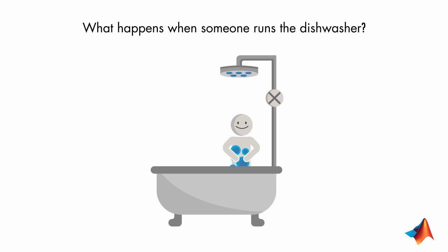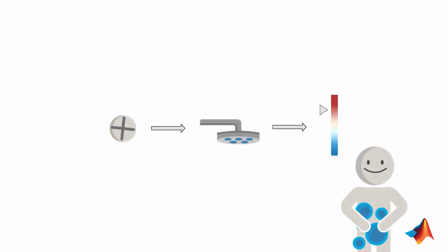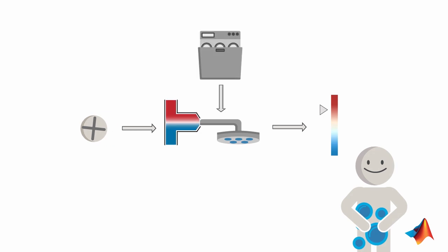Water gets freezing cold. The reason is that when the dishwasher is running, the hot water supply is used up and therefore less hot water is available for the shower. So the water temperature drops. This is another shortcoming of open loop control. Unexpected environmental changes acting on the system affect the output.